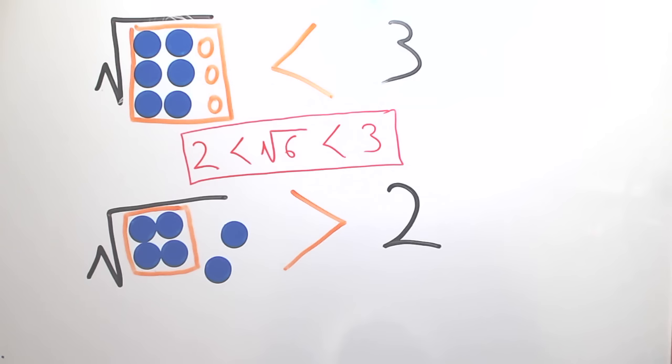When finding square roots, it can be really useful to know your multiplication tables so that you can recognize the perfect squares without having to try forming squares out of counters.